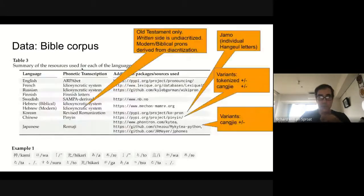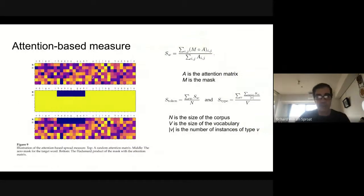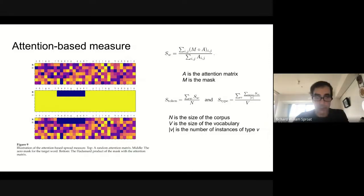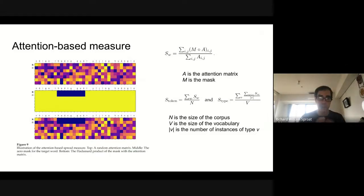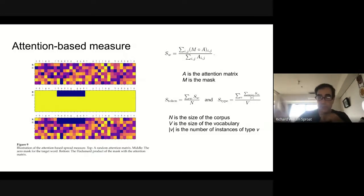If the system is highly phonographic, as in Finnish, you get something very close to zero because almost nothing would be outside the window of interest. Whereas if it's highly logographic, it should be close to one or at least much larger than zero.